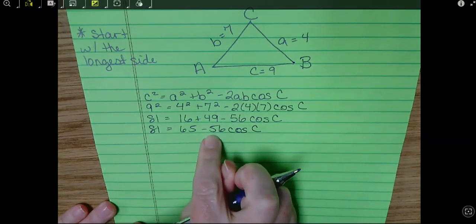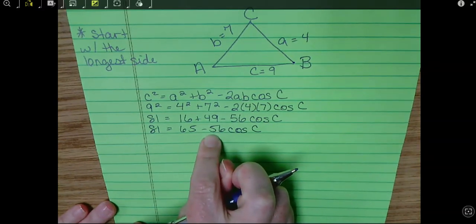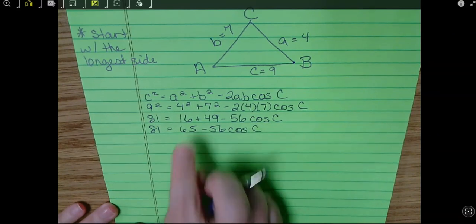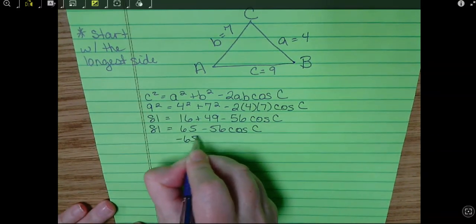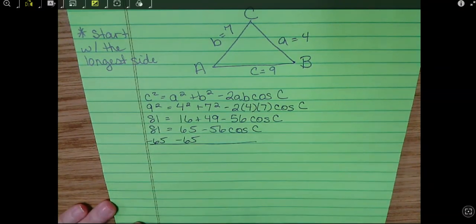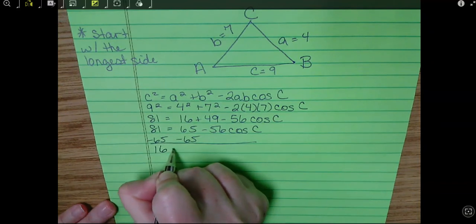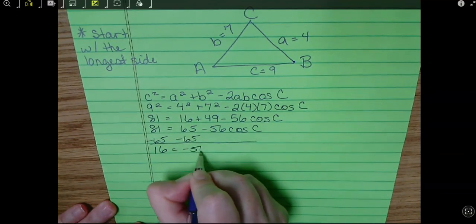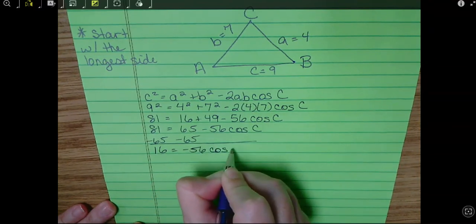So 81 equals 65 minus 56 cosine C. And this is still going to scream, please subtract me or not. Okay, we've got to get everything away from the cosine C. So first thing is I'm going to move the 65 over. So 81 minus 65 is 16 equals, please do not drop that negative, negative 56 cosine C.